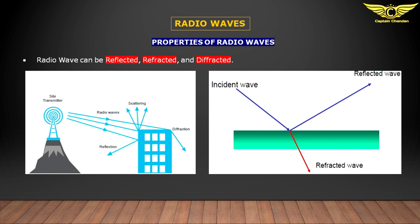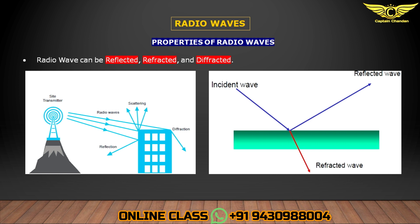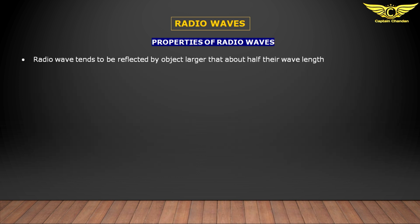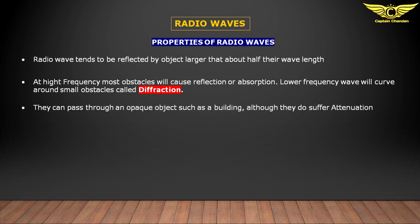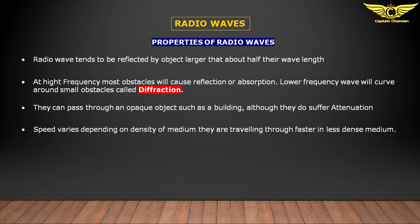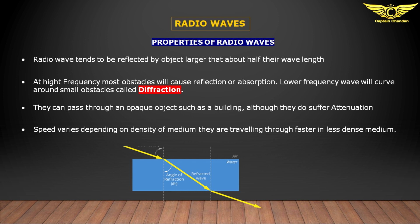Refraction: the change in direction of a wave passing from one medium to another caused by a change in speed is called refraction. Diffraction: the bending of a wave around the corner of an obstacle is called diffraction — you can see examples in the diagram. Radio waves tend to be reflected by objects larger than about half their wavelength. At high frequency, most obstacles cause reflection; lower frequency waves curve around small obstacles — that is diffraction. They can also pass through opaque objects such as buildings, though they do suffer attenuation. Speed varies depending on the density of the medium — faster in a less dense medium.